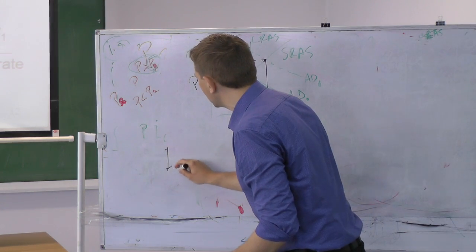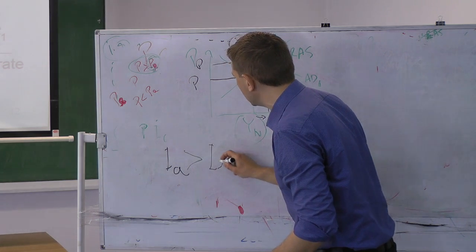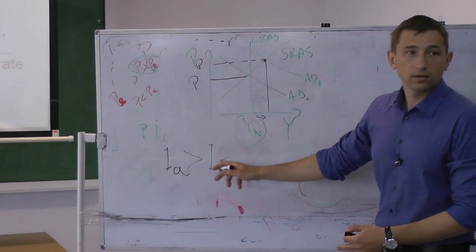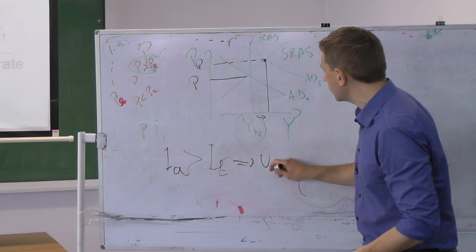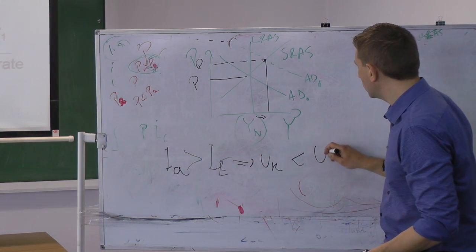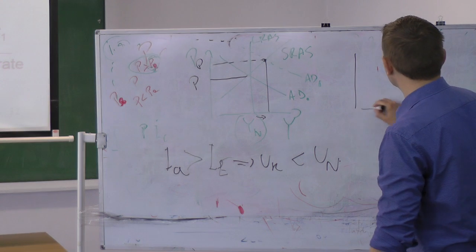So actual inflation is higher than expected inflation, which is very good for the economy, which makes unemployment rate lower than the natural unemployment rate. It's what we see there in the graph.